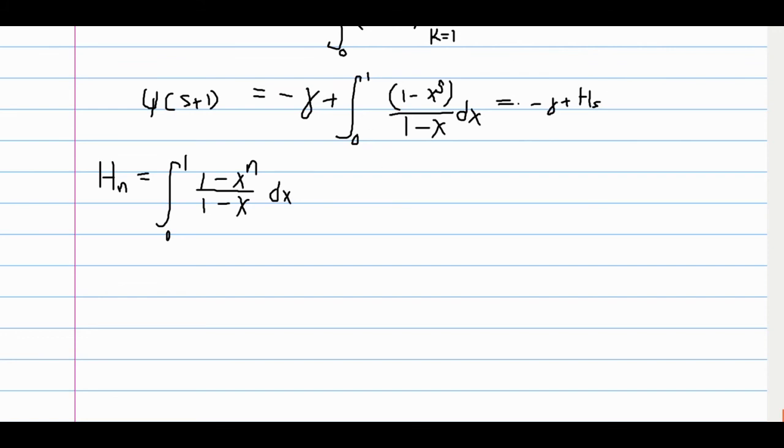So, obviously, this will only hold true for integer values of s. So, s has to be an integer, because the harmonic numbers are only defined on the integers. But, other than that, we can use this to get any integer value, evaluated at the digamma function.